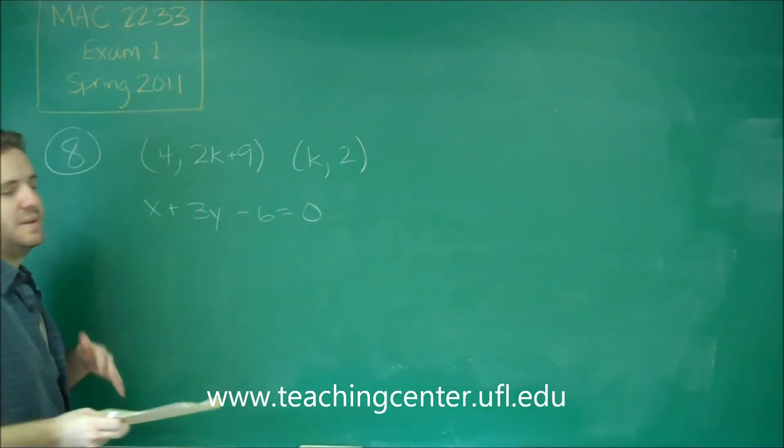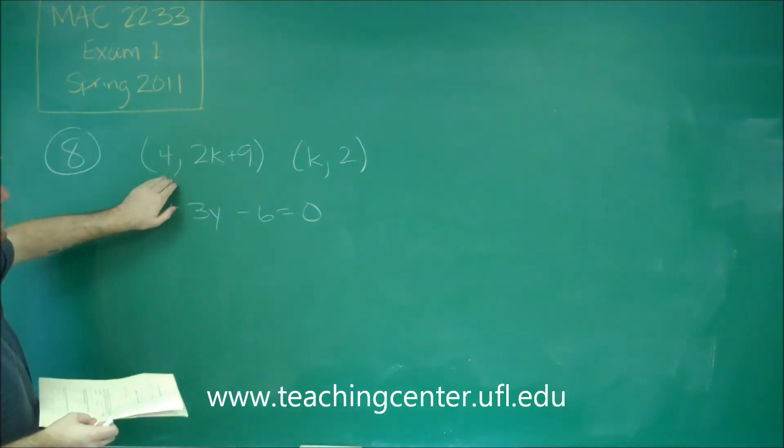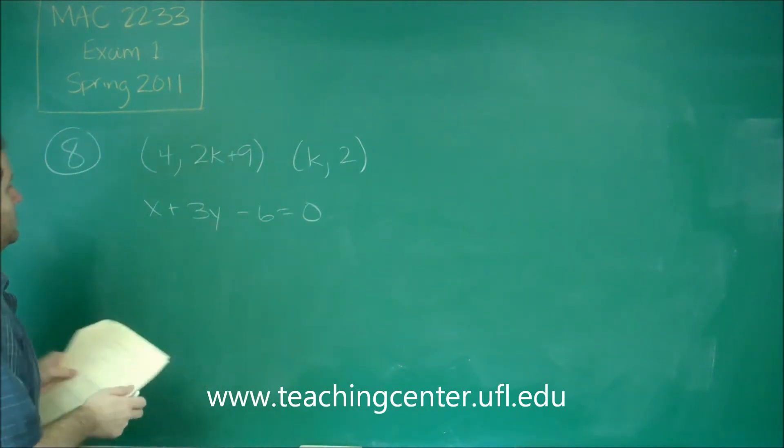So we know that their slopes have to be negative reciprocals of each other. Let's figure out what their slopes are. The slope of this one is going to be delta Y over delta X. So if we do that here...